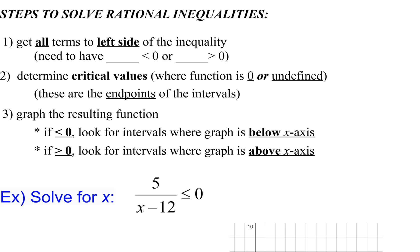The first step is still the same. We're going to get everything to the left side. We want all things related to zero, either less than zero or greater than zero. Then we determine these critical values. These are the places where the function is either zero or undefined.